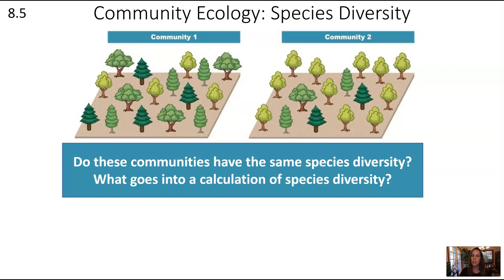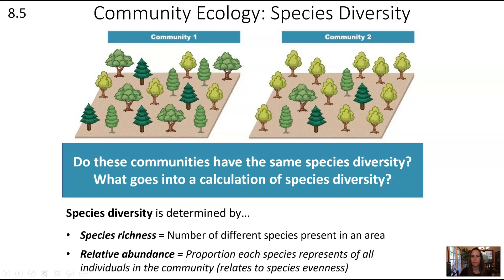To understand species richness and species diversity, let's look at two communities of trees. Diversity takes into account two factors: species richness, which is the number of different species present in the area, and relative abundance, which is the proportion each species represents of all individuals in the community. This relates to species evenness — the more equal the relative abundance of all the species, the higher the diversity.